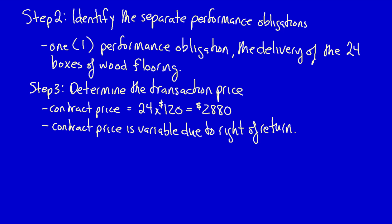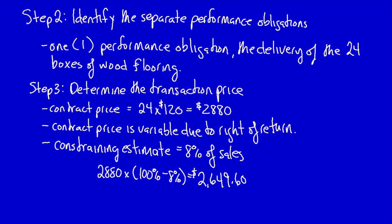One customer might return 50% and another one returns nothing. So now we have variable consideration. Therefore, Green Inc. must apply the constraining estimates of variable consideration in order to avoid recognizing too much revenue. Remember that Green Inc. had estimated that 8% of all products that are sold will be returned in a saleable condition. So the return is expected to happen. The appropriate transaction price must take this into account. We can't recognize the $2,880. We can only recognize the revenue after the constraining estimate. The transaction price on the date of sale will be $2,649.60.